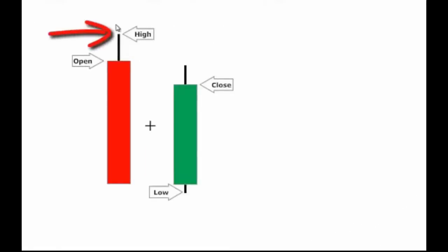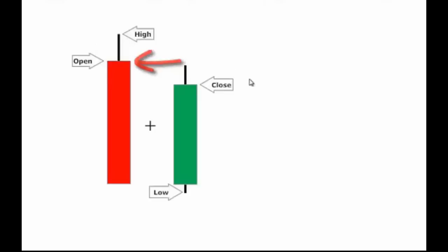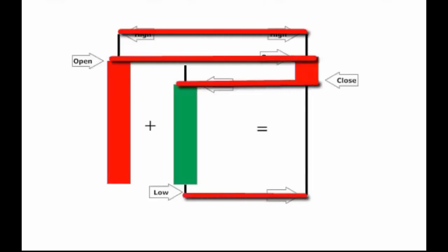This is an example of candlestick math. This animation is from a course I was taking - the animation is much better than I can do. The concept is the same: you see two bars side by side, showing where the wicks and bodies are on these two separate bars. In the first case we have a bearish bar, in the second case a slightly bullish bar. When you add these two bars together, this bullish bar and this bearish bar wind up producing a slightly bearish bar with a little bit of body and a much longer wick.